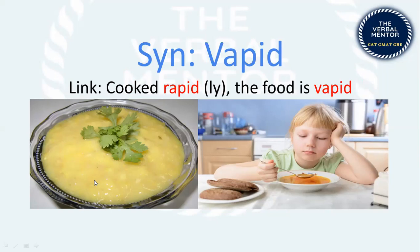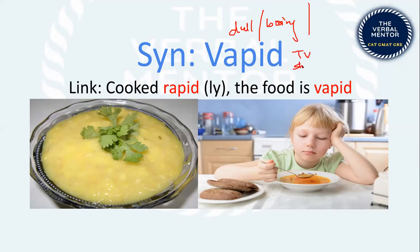Another synonym is 'vapid' — meaning boring, dull, tasteless. Importantly, these words are not used only in the context of food; they can be used for anything that is uninteresting, dull, or boring. A vapid TV show or a vapid novel are perfectly correct usages. Memory tip: cooked rapidly, the food is vapid — khichdi is cooked rapidly, so the food is vapid.